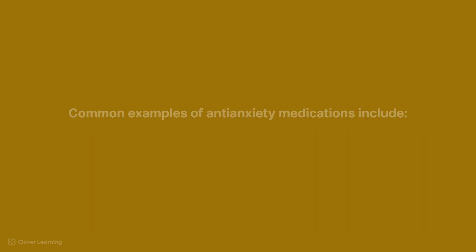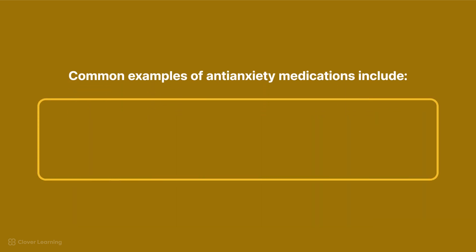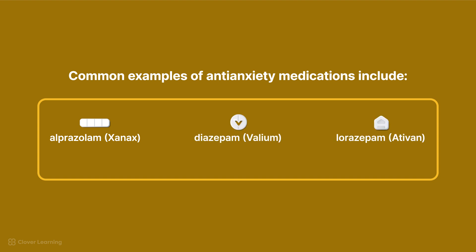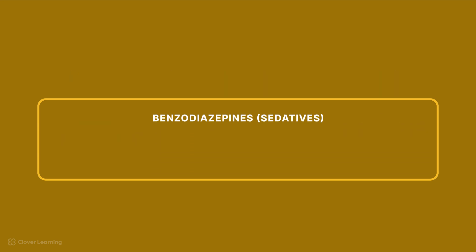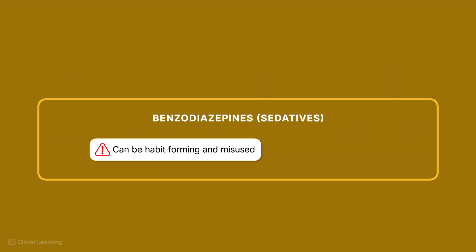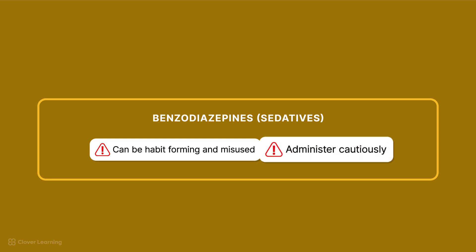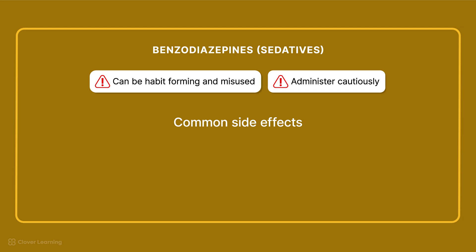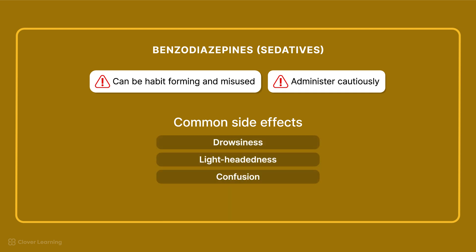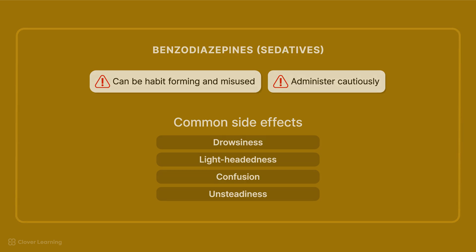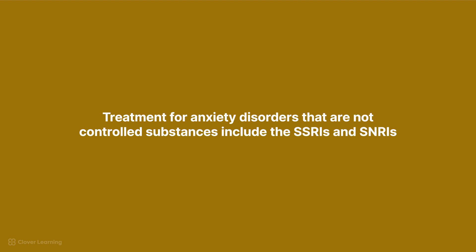Common examples of anti-anxiety medications include alprazolam (Xanax), diazepam (Valium), and lorazepam (Ativan), which are benzodiazepines, or sedatives. Benzodiazepines are controlled substances because they can be habit-forming and misused; healthcare providers should administer them cautiously. The most common side effects of benzodiazepines include drowsiness, lightheadedness, confusion, and unsteadiness — especially in older people, who may fall and injure themselves. Treatment for anxiety disorders that are not controlled substances includes SSRIs and SNRIs.